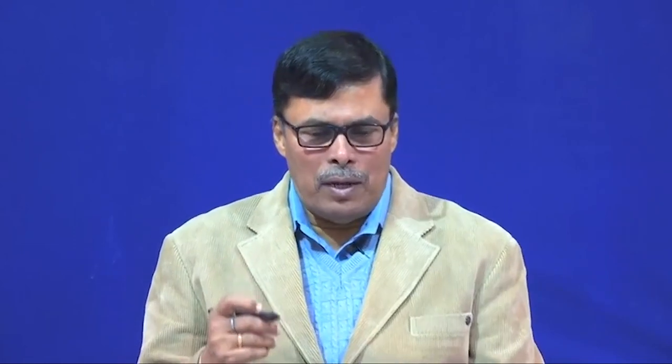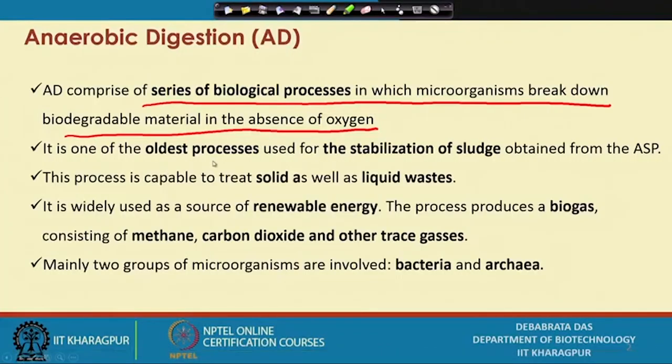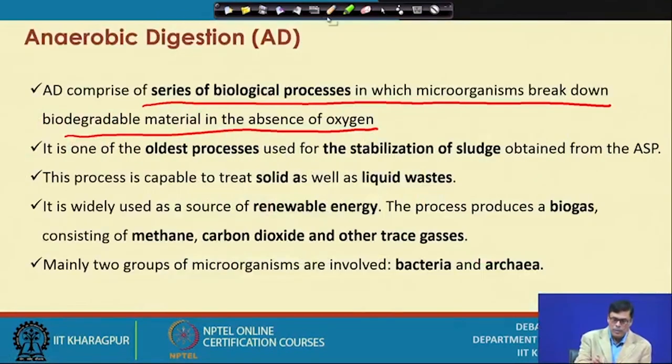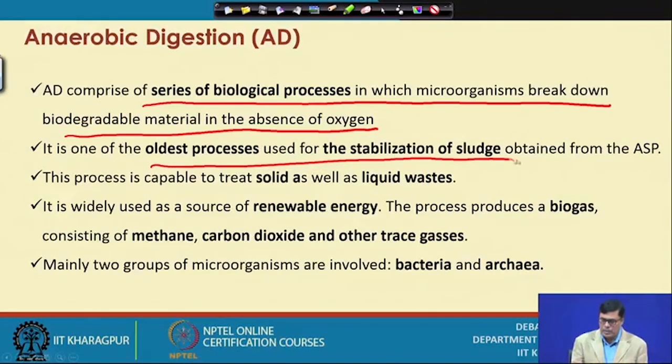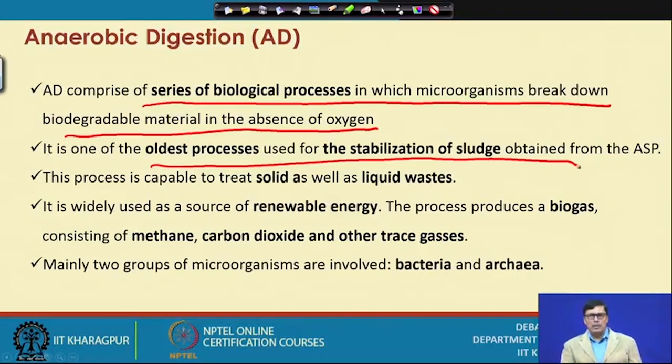Indirectly, the nutrient requirement for anaerobic fermentation is much less compared to aerobic, since aerobic cell mass growth is about 10 times that of anaerobic. All reactions occur in the absence of oxygen, and this is one of the oldest fermentation processes — used for stabilization of the sludge obtained from the activated sludge process.